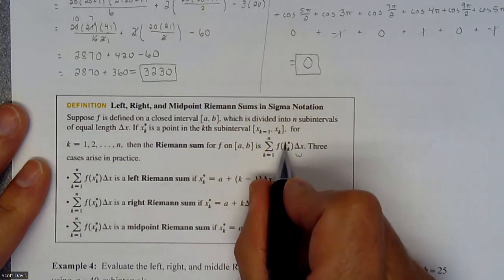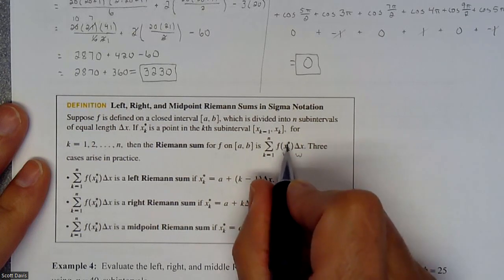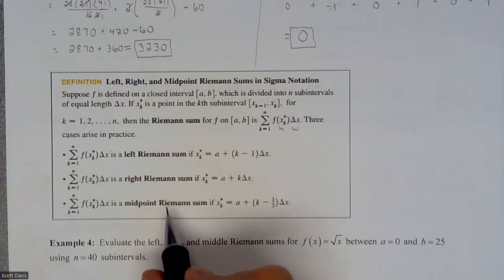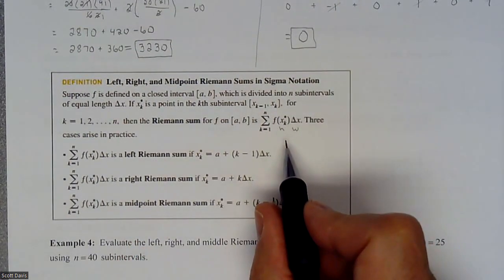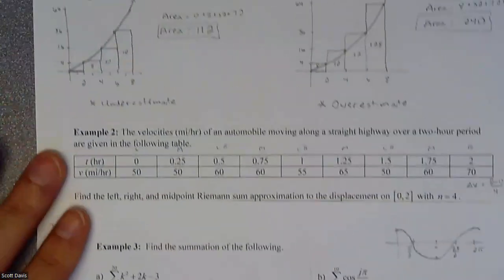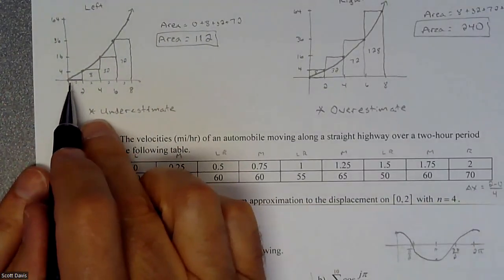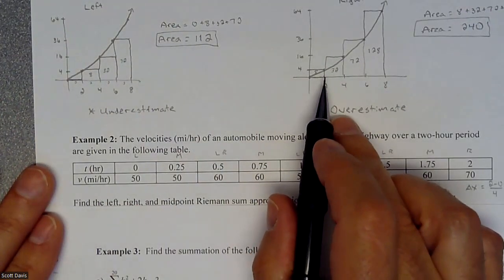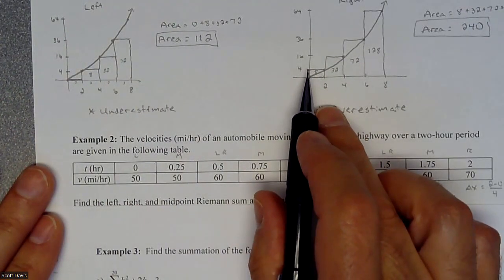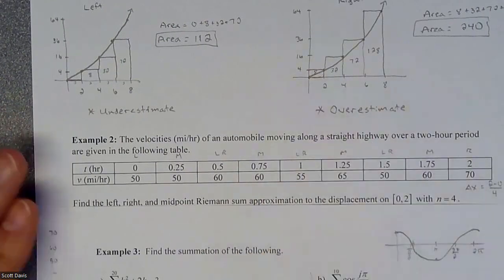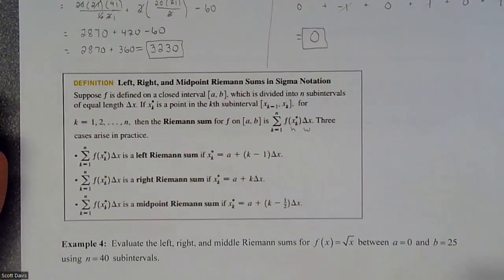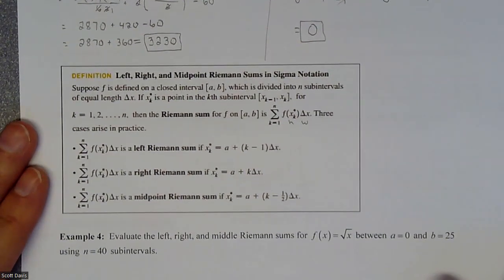What gets tricky is this x value. The x value you're plugging in dictates the height, and it's going to be different if you have a left Riemann sum, a right Riemann sum, or a midpoint. It's formula driven. For example, when I did a left Riemann sum I had a height of 0, versus a right Riemann sum where I had a height of 4. The formula has to account for these different x values.